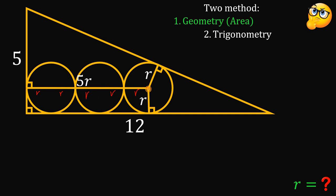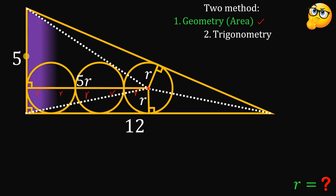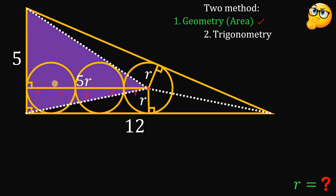From here, we consider this center point and connect it to the three vertices of this right triangle. We will use the area of these three triangles, and note that the sum of their areas must equal the area of the whole right triangle. Let's start: what is the area of this triangle? We know the base is 5 and the height is 5r.